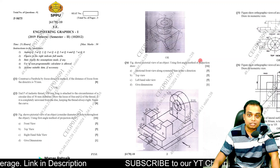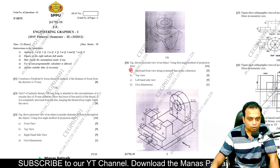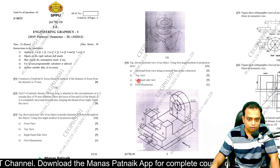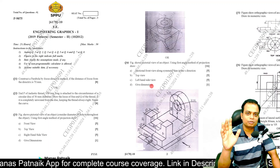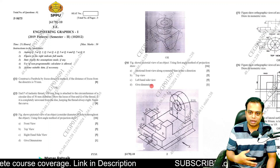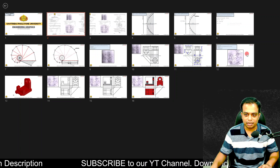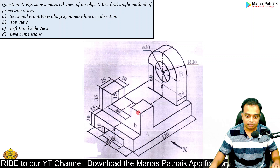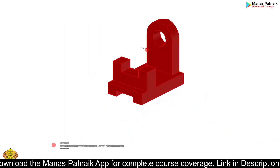This is for 16 marks. The figure shows the pictorial view of an object. Using the first angle method of projection, draw the sectional front view along the symmetry line in the X direction, top view, left-hand side view, and also give the dimensions. I won't be giving the dimensions — that's only one mark, you can add them in your own manual drawings. Please note that you are going to cut the solid assuming the cutting plane passes through this line of symmetry.